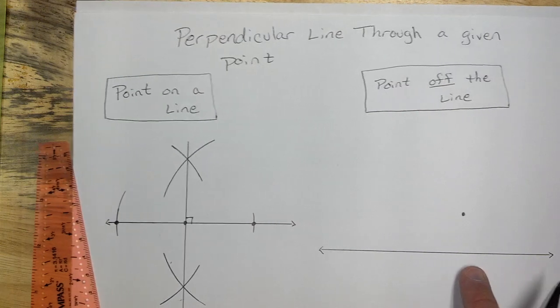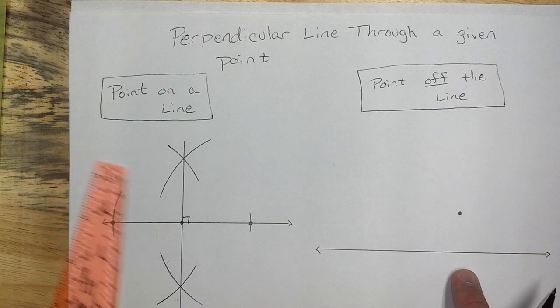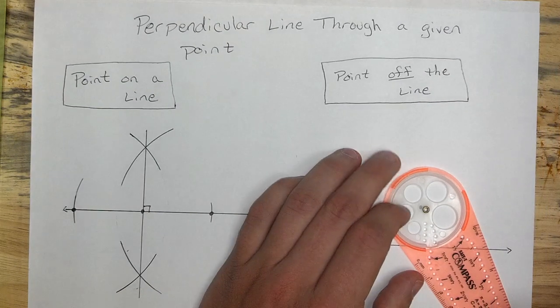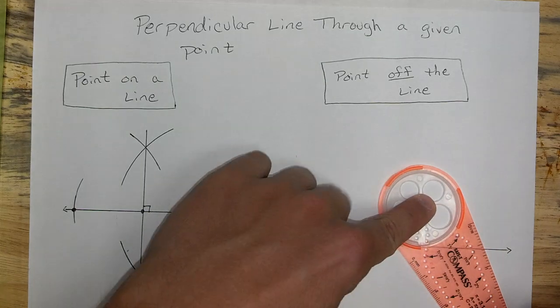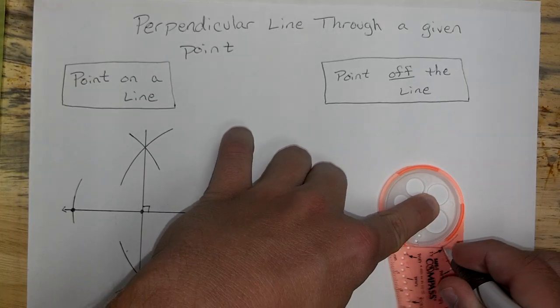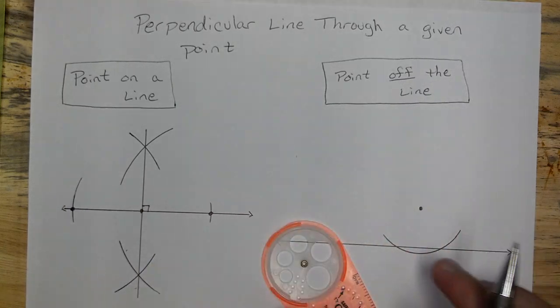Now, if we come over to the point where it's off the line, we can do something very similar. Using our compass, and being right there on that point, I can make an arc, so that it comes down here, and goes through my line.